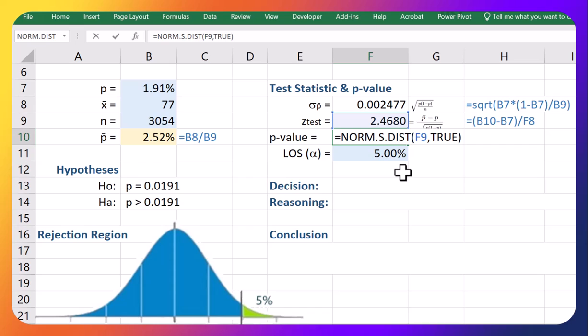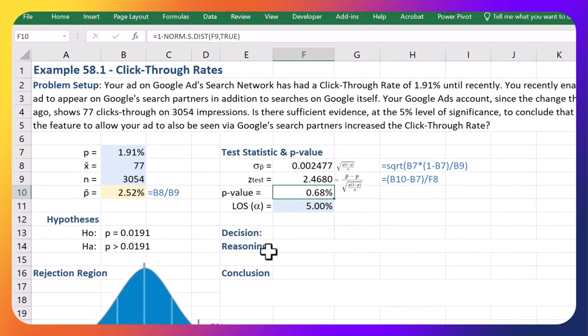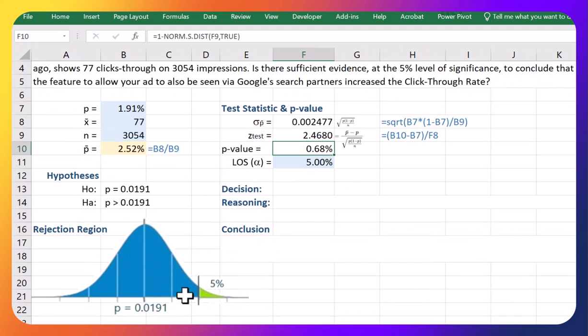And that gives me my p-value of, oh sorry, missing one thing, forgive me, very important. Because this is a right-tailed test, I do a 1 minus there. So if we look here we are looking for the right tail so we're going to do a 1 minus to get this upper area. So NORM.S.DIST, 1 minus that to get this p-value.